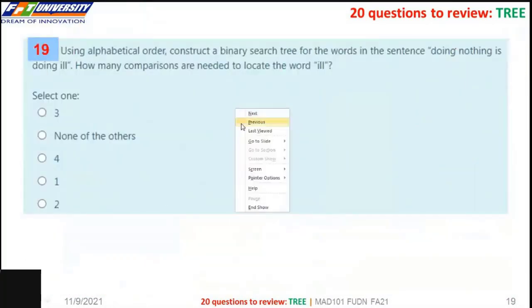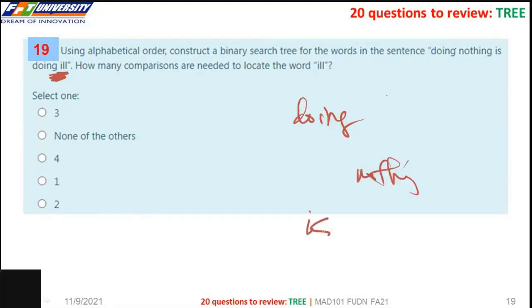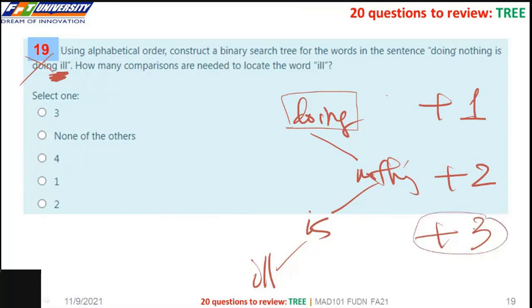So now, try to the next. The U here, so doing nothing. Ace. I think I here. So I think one comparison, two comparison, three comparison to locate the edge. The correct answer is 3.